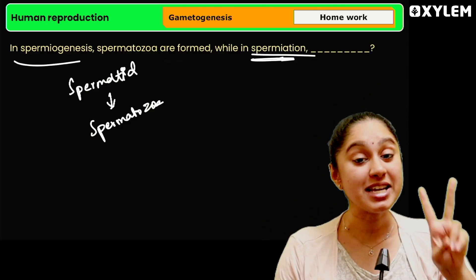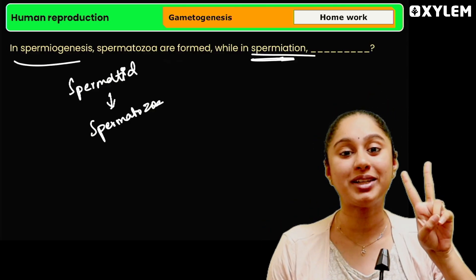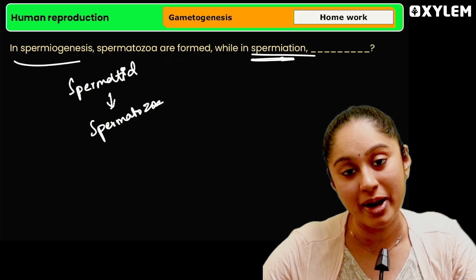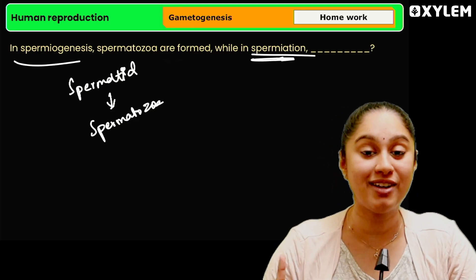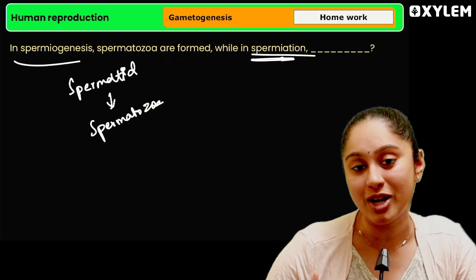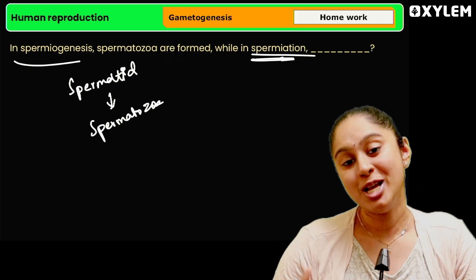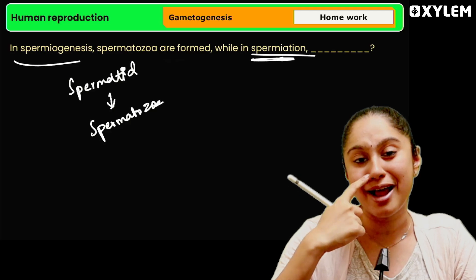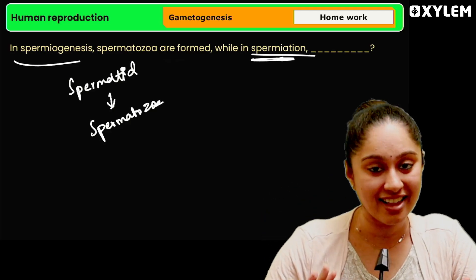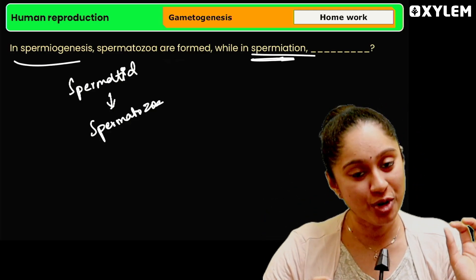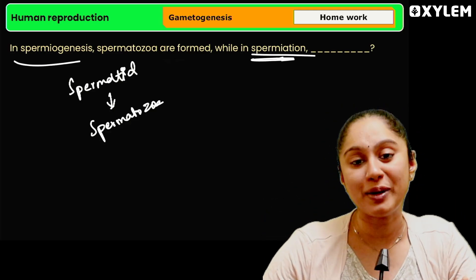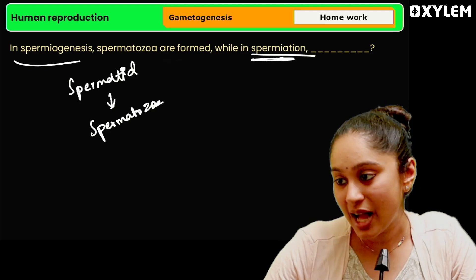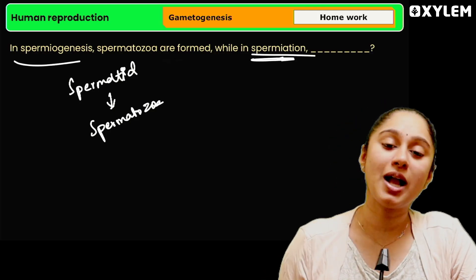Spermatozoa is formed while spermiogenesis is happening — spermatid is getting converted to spermatozoa. That is spermiogenesis. What is happening in spermiation is different — that is your MCQ homework. Comment your answers in the comments section, I will be waiting to see all your answers.